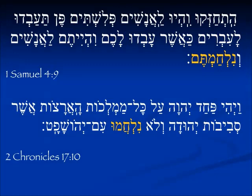In 1st Samuel 4:9, the ark has come into the Philistine battleground. The Philistines are very afraid and so their leaders are encouraging them: be men and fight. Again it's a vav conversive — we see it conjugated in the past tense but it will be for the future tense.